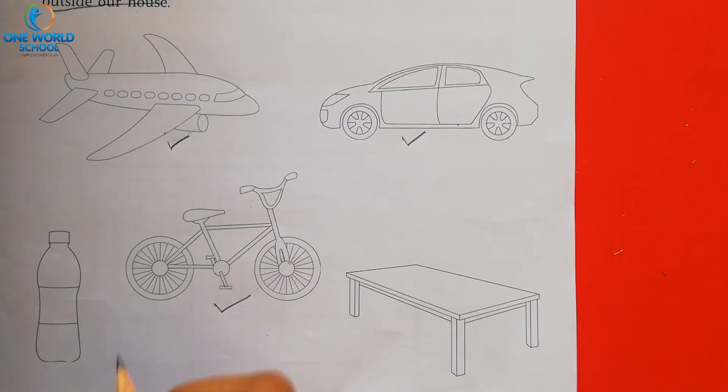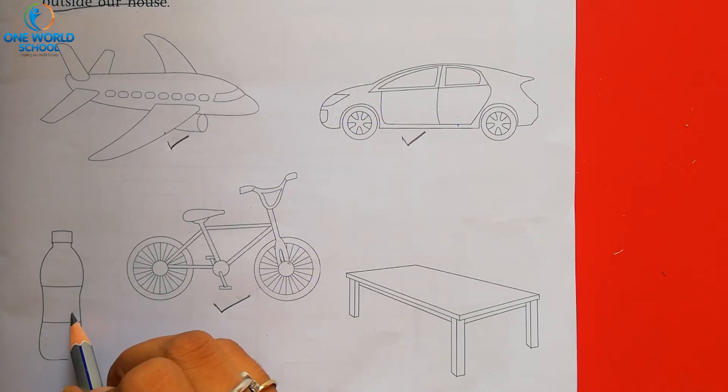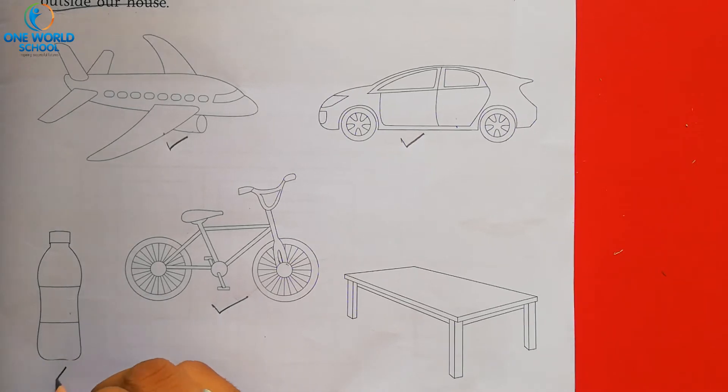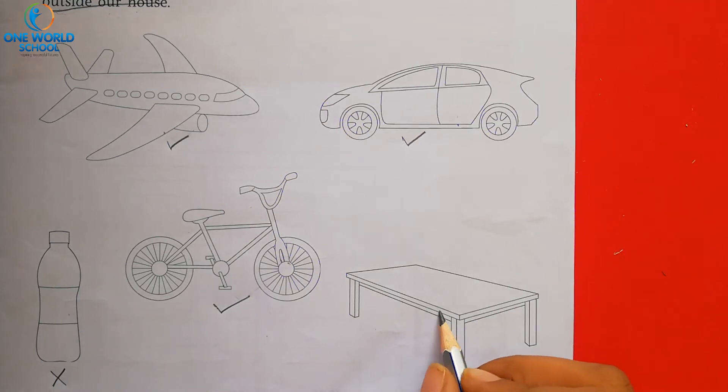Now, next one. What is this? This is water bottle. So, water bottle machine is not. So, we will color it. Now, what is this? This is table. So, table machine is not. Table is not living thing. Okay?